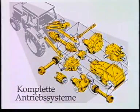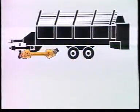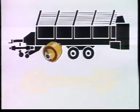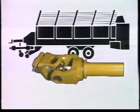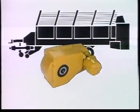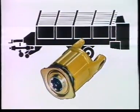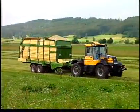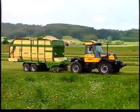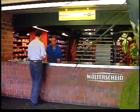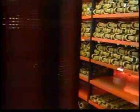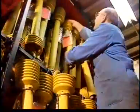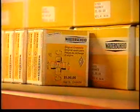The Walterscheid driveline system offers complete drive systems from a single source. System solutions are their forte, and Walterscheid has special drive solutions for the most diverse machine concepts. Walterscheid has branches wherever its customers are, across the whole world. A well-assorted stock of original spare parts for PTO driveshafts, PTO driveshaft guards, overload and overrunning clutches guarantees rapid supplies around the clock.